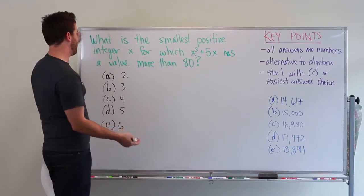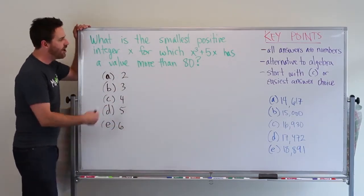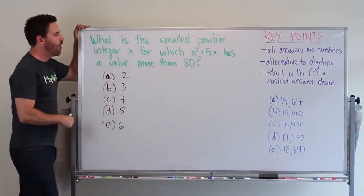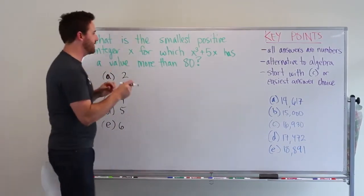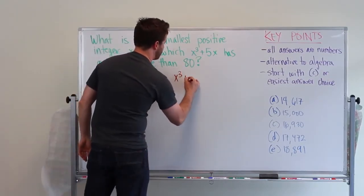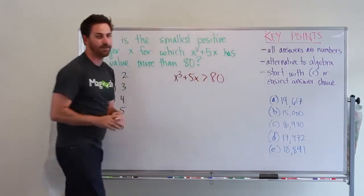In this case we have a question: what is the smallest positive integer x for which x³ + 5x has a value more than 80? So what number for x gives us x³ + 5x greater than 80?